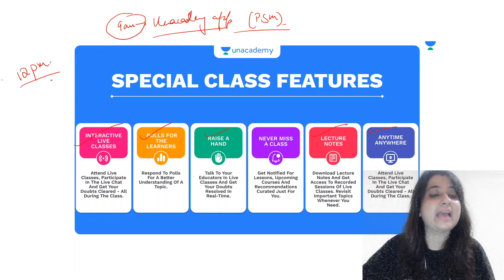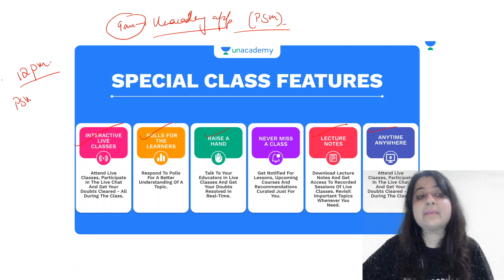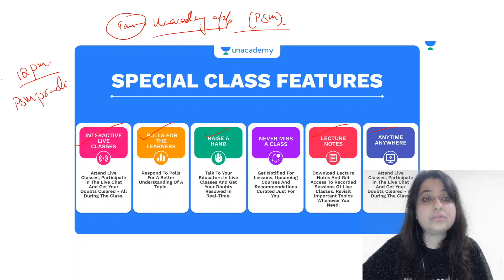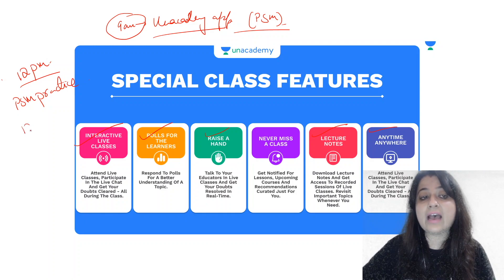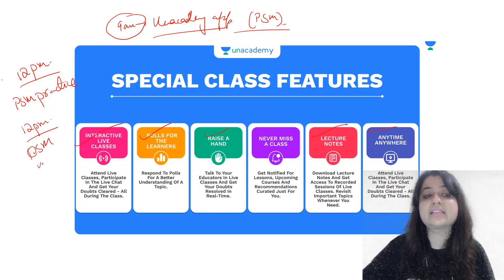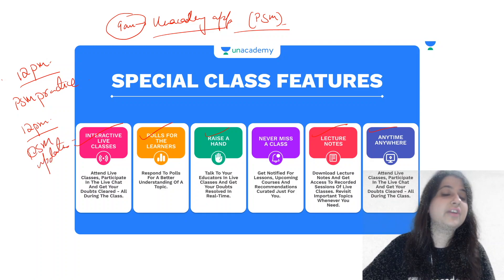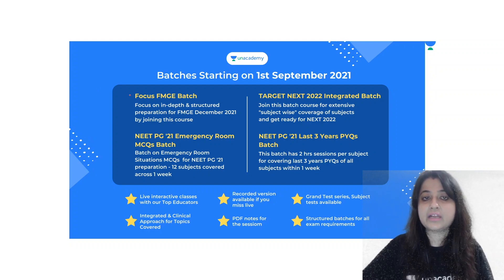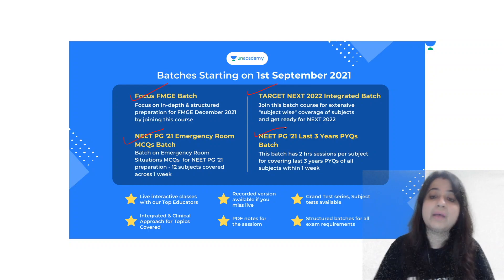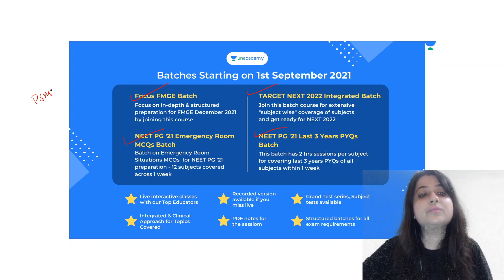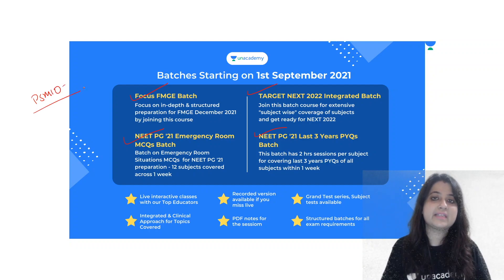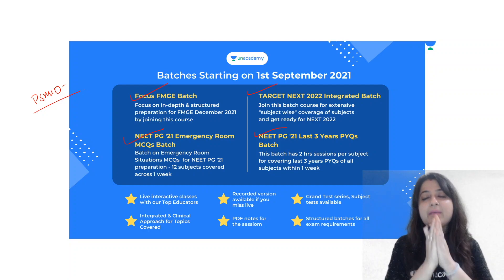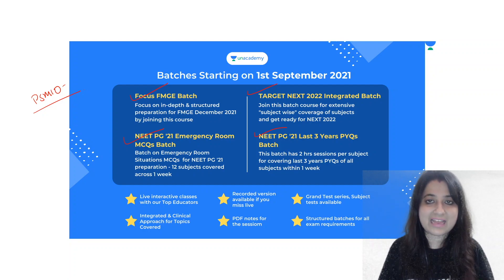I also go live at 12 PM on the Unacademy app absolutely free for PSM practice tests. This Saturday at 12 PM we will discuss all the PSM updates. Batches that have just started include Focused FMGE, NEXT 2020, NEAT PG21 Emergency Room MCQ batch, and Last Three Years PYQ batch. To subscribe, use my code PSM10 for a 10% discount. Do download the Unacademy app and like, comment, and subscribe. Thank you so much.